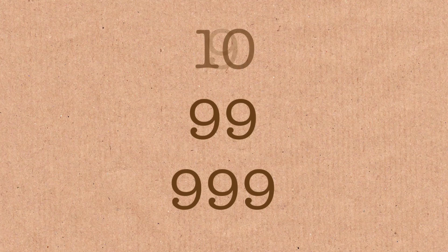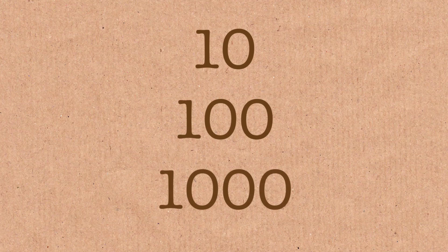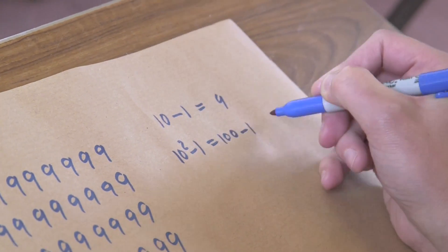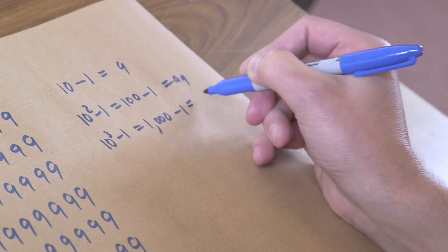How can we actually transport this without writing out all these 9s? What's really cool is the fact that they are 9s. If you add 1 to 9 you get 10; add 1 to 99 you get 100; add 1 to 999 you get 1000. So we can use that fact: 10 take 1 is 9; 10 squared take 1 is 99; 10 cubed take 1 is 999.